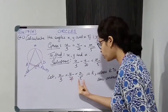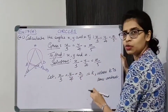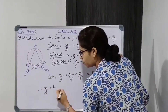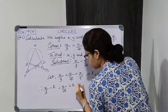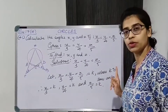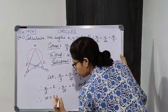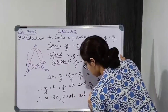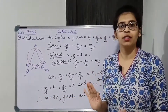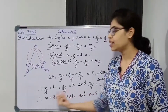Shifting the numbers to the other side: x = 3k, y = 4k, and z = 5k. If we find the value of k, the angle measures will be easy to find. Once we know the value of k, x, y and z can be found.